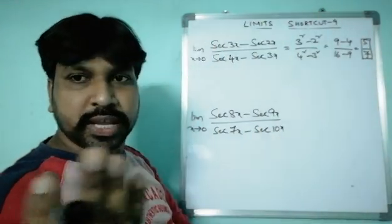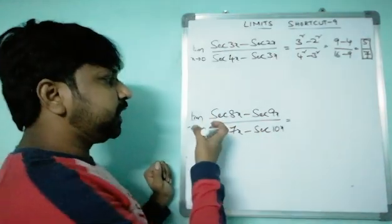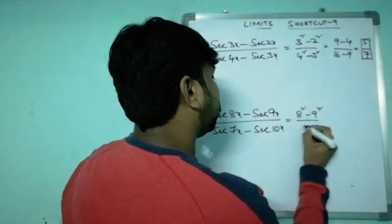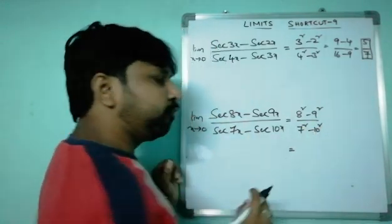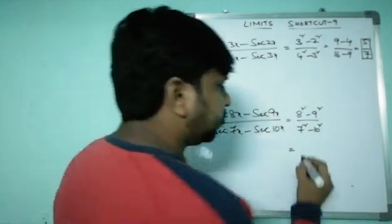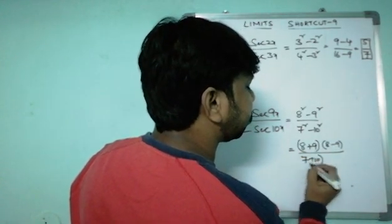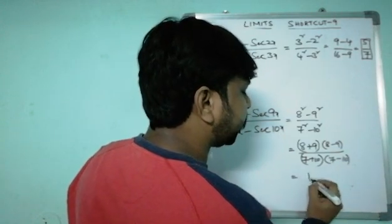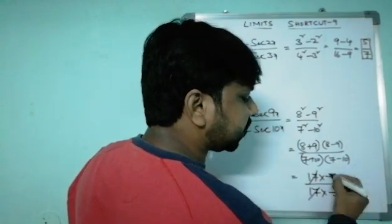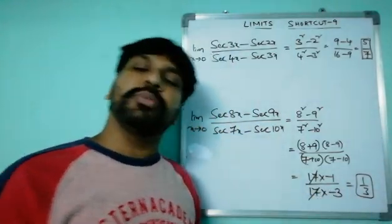Friends, just two seconds enough to complete this sum. Similarly if you want to solve this sum, limit x tends to zero secant 8x minus secant 9x by secant 7x minus secant 10x equals 8 square minus 9 square by 7 square minus 10 square. If you feel the calculation is lengthy then you should use a square minus b square formula, a plus b into a minus b. That's 8 plus 9 into 8 minus 9 by 7 plus 10 into 7 minus 10. Then this is 17 into minus 1 by 17 into minus 3. Then 17, 17 get cancelled and minus, minus get cancelled, you are getting the answer 1 by 3. Hardly two or three seconds, it's very easy problem friends.